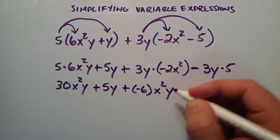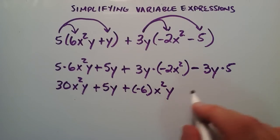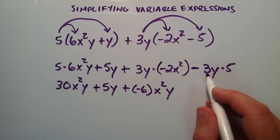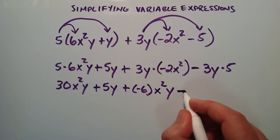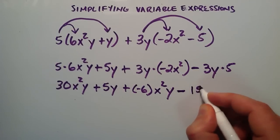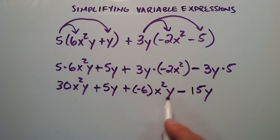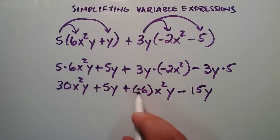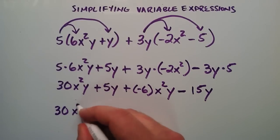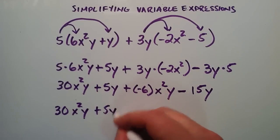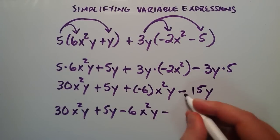The reason why I'm doing that is I'd like this term to match the first one so that we can combine them a little bit later. So now we have this last term here, and this last term is a 3 times a 5. We're going to put the subtraction sign here, and then 3 times 5 is 15, and then we put our y down. So now we just have to simplify this term a little bit. When you add a negative number, it's the same thing as subtracting. So we're going to rewrite everything the same and change that one term: plus 5y, and then minus 6x squared y minus 15y.